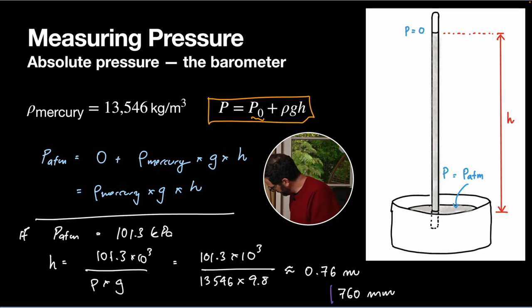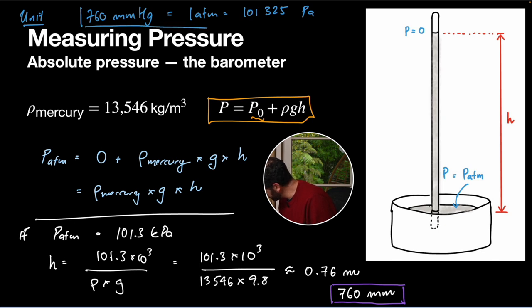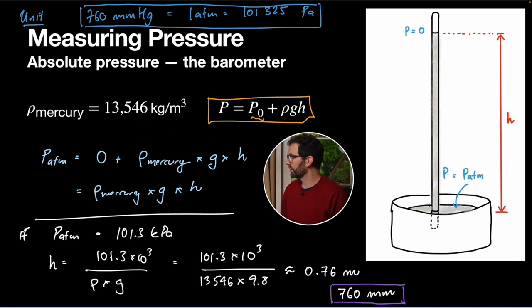So funnily enough, people measure pressures in millimeters of mercury for this very reason, which is kind of weird, it's kind of crazy. Alternative units: 760 millimeters of mercury, and so some pressures will be specified as millimeters of mercury particularly in the medical world. That's defined to be one atmosphere, which is that 101,325 pascals we mentioned earlier. So if you've come across a pressure specified as millimeters of mercury, that's how you convert it into our standard units of pascals.